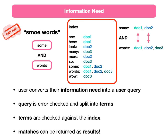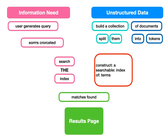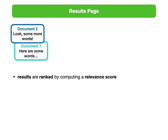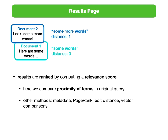We check those terms against the index and figure out which documents match. 'Sum' has documents one and two. 'Words' has documents one, two, and three. We compare them one bit at a time — two of those documents are going to work. We've taken a user-generated query, corrected some of its errors, searched the index, and get out the other side: matches found. On the results page, we rank them by relevance. One simple approach is: how far apart are the query words in the document? Document two has a distance of one between our words; document one has no distance. So we use proximity of terms to rank the most relevant search result.